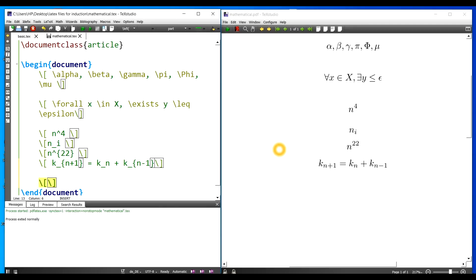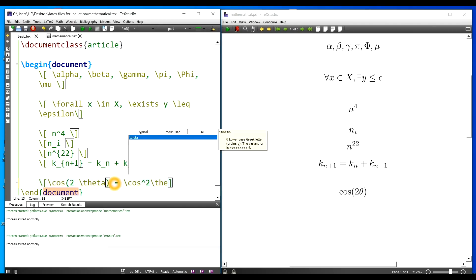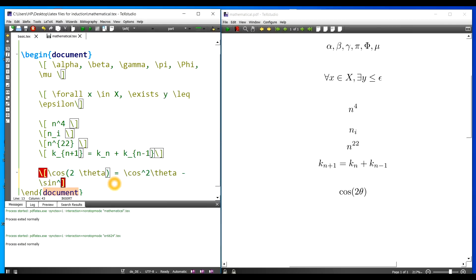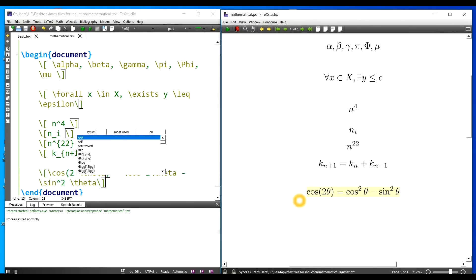Next let's go to some trigonometric functions. Let me write slash cos for cosine, say 2 theta. So you get a proper cos and 2 theta. Now you can write some identity. So I want to write slash cos square, I will use caret for writing square, theta minus slash sine square theta. So you can see the expression comes out in a proper format. Similarly you have other trigonometric functions which you can look at.